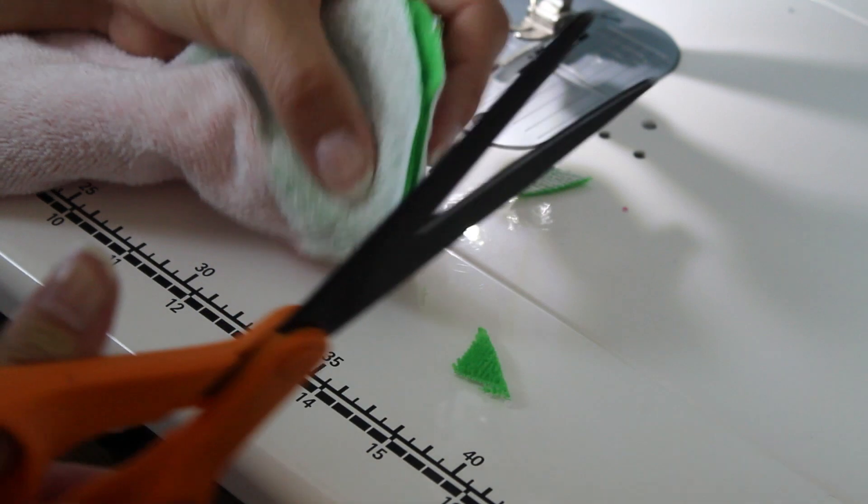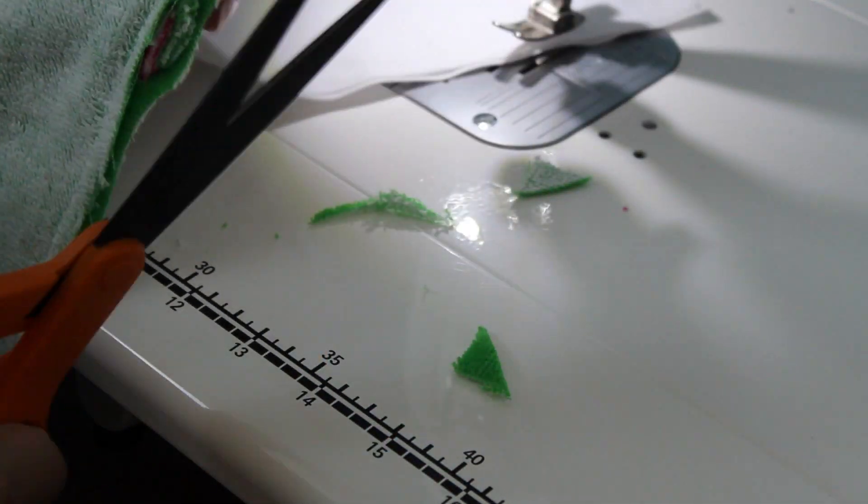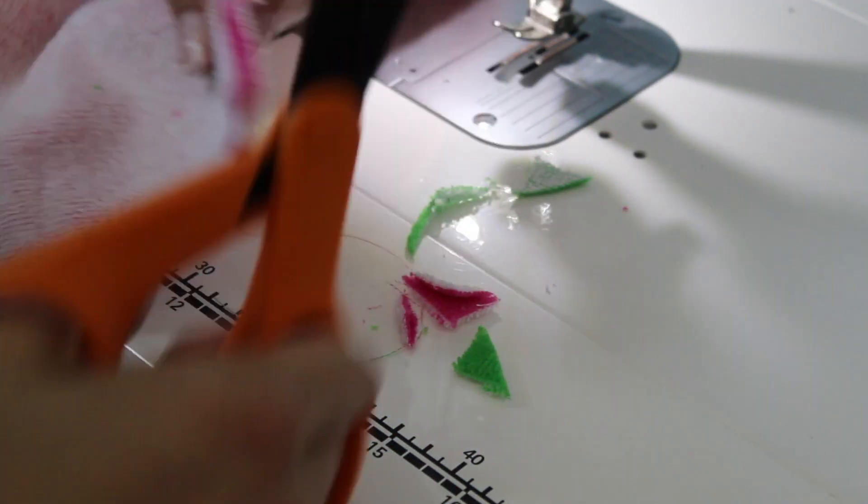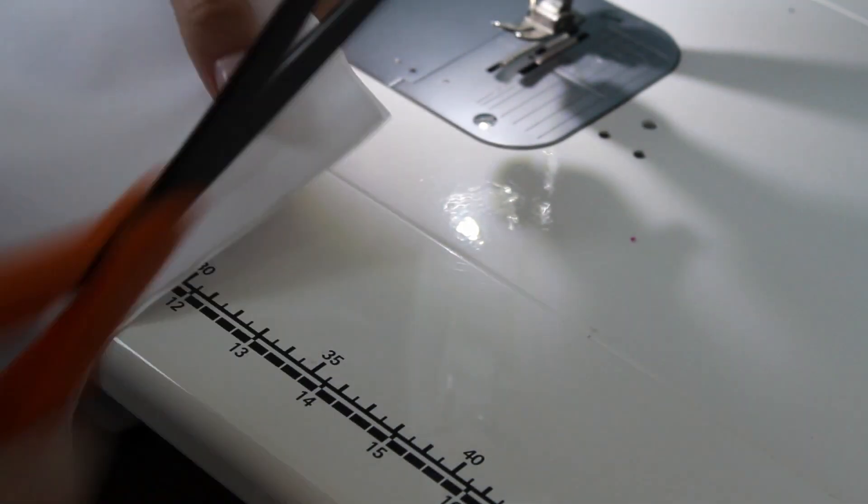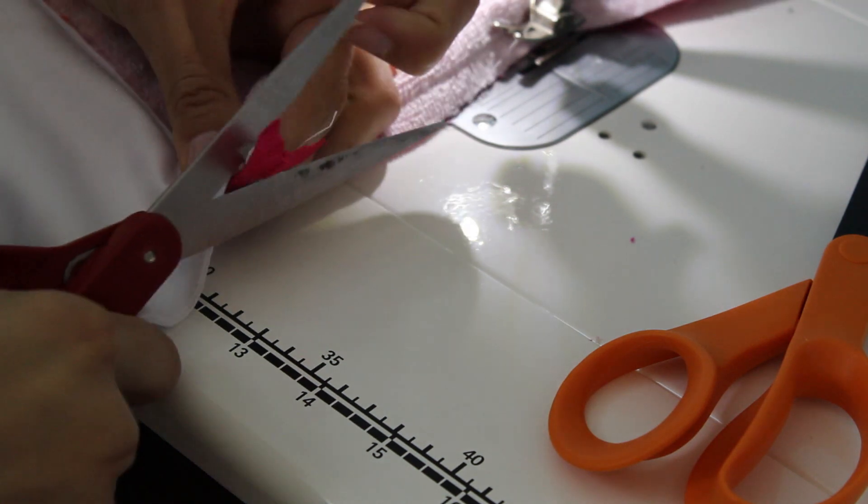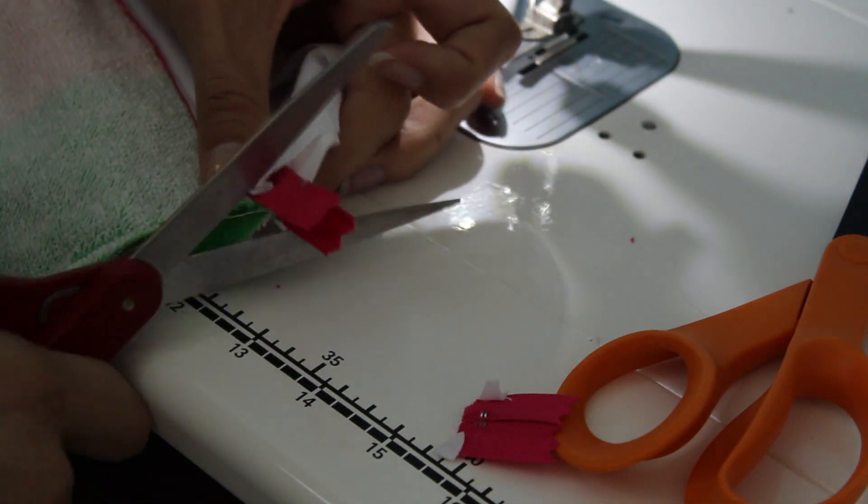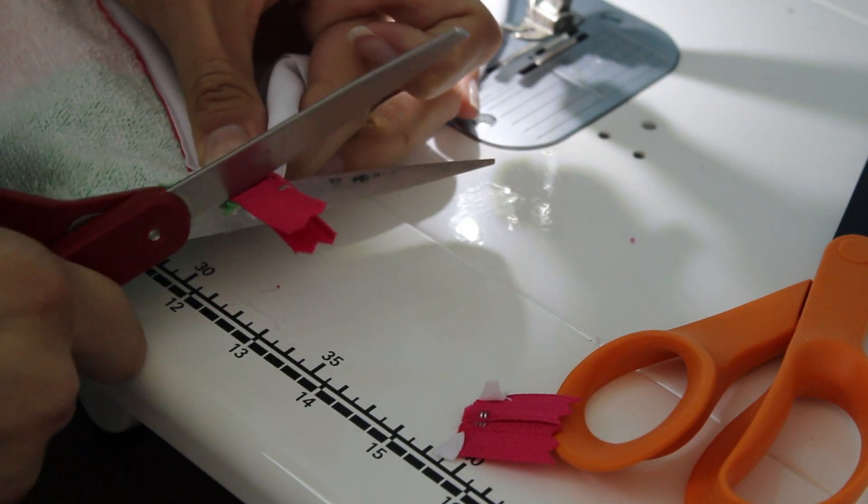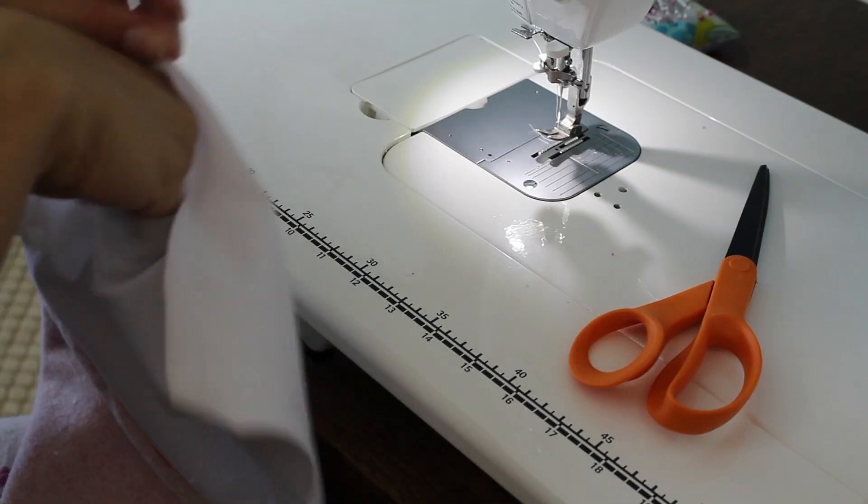Clip your corners. And then you're going to flip your pouch right side out. You can also kind of grade those seams and trim those seams if any of them are a little bit bulky. Use some non-fabric scissors and trim off the sides of those zippers as well.